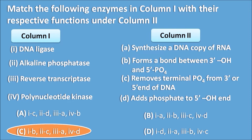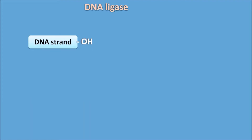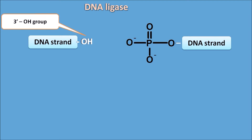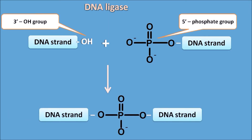Let us go through the explanation and see the role of each enzyme and how they match with column 2. Starting with DNA ligase: suppose a DNA strand has a free 3-OH group and another DNA strand has a 5-phosphate group. When both are combined, they produce a DNA strand with a phosphate linkage. This is mediated by DNA ligase, which connects the 3-OH group with the 5-phosphate group between the two DNA strands.